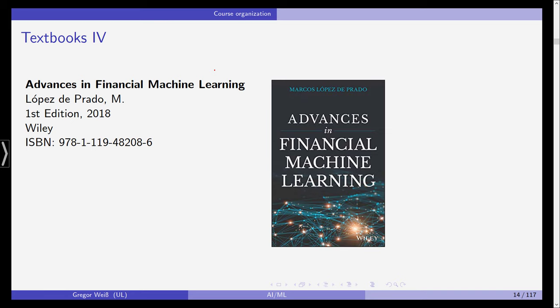The fourth one is advances in financial machine learning by Lopez de Prado. This one is very, very applied and it has a strong focus on, I would say, trading and algorithmic trading. It is a good companion textbook in addition to the Hasty and Tip Shirani textbooks. Again, as the cover and the title suggests, it is focused on finance and financial economics primarily. But it focuses on a subset of problems in finance that I would consider is important, but it doesn't really cover the whole range of topics that we will be talking about in this class. So it's a good additional read, I would say.